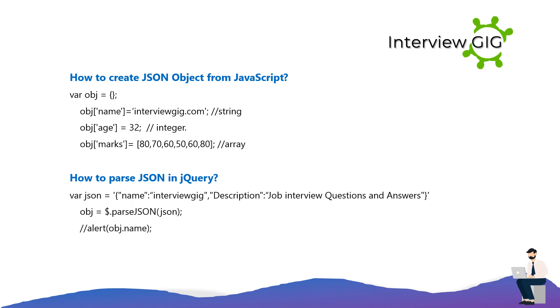How to parse JSON in jQuery: var json = '{"name":"InterviewGig","description":"Job Interview Questions and Answers"}'; obj = $.parseJSON(json); // alert(obj.name).